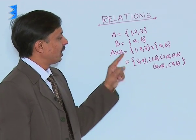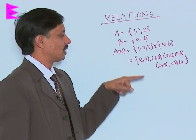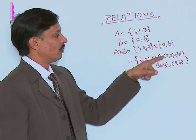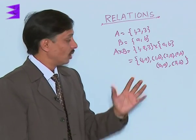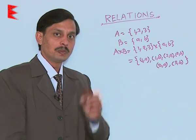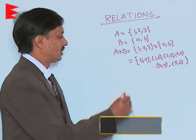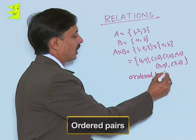After obtaining A cross B, that is A = {1, 2, 3}, and B = {a, b}, we have obtained the elements in the form (1,a), (1,b), (2,a), (2,b), (3,a), (3,b). So, elements are coming in the form of pairs. These pairs are known as ordered pairs.